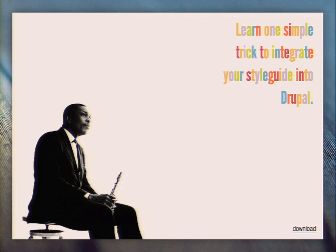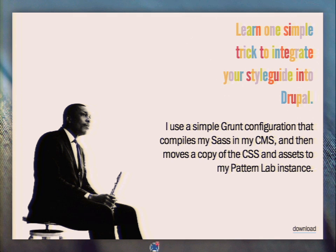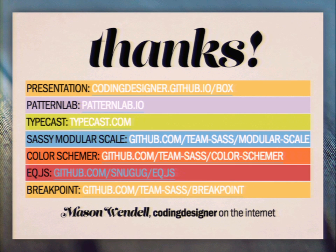Finally, there is the trick of working within your development environment. Pattern Lab is its own thing — it's not part of Drupal. What I like to do is all of my styling within my development environment, within my Drupal theme, and then have Pattern Lab react to that. I made a really simple Grunt configuration that compiles my CSS from my Sass and then moves that into my Pattern Lab instance. You can also collect images, JavaScript, and fonts, as well as do things like JS hinting. But at its core, what I need it for is moving things from A to B. There's a download link in the slides on GitHub so you can experiment and use it for your own purposes.